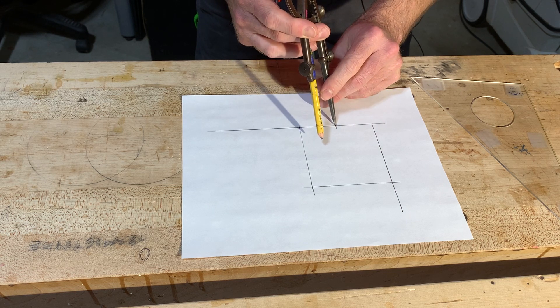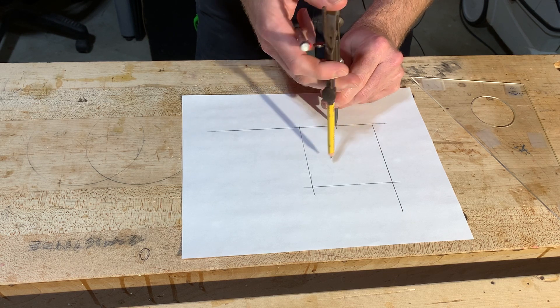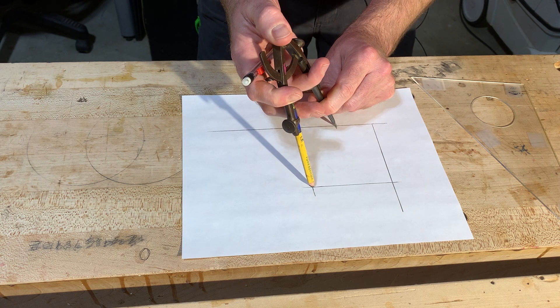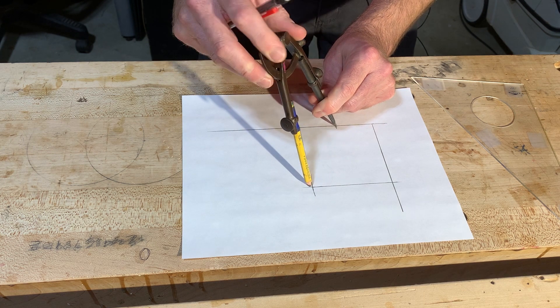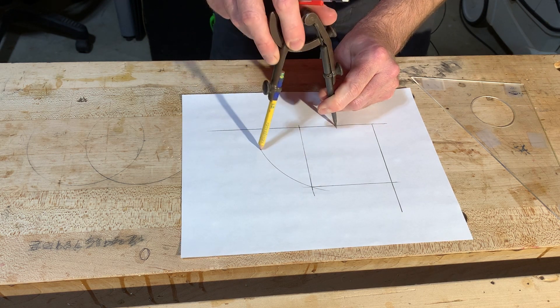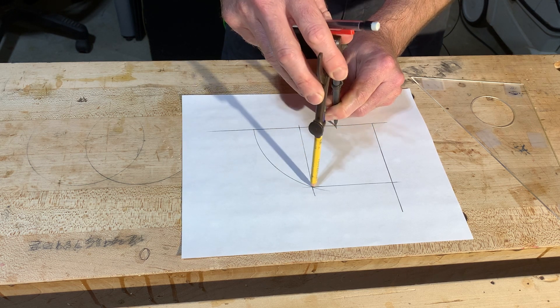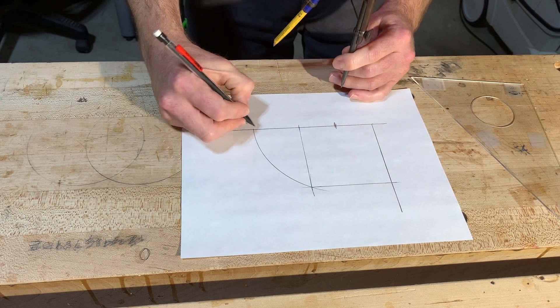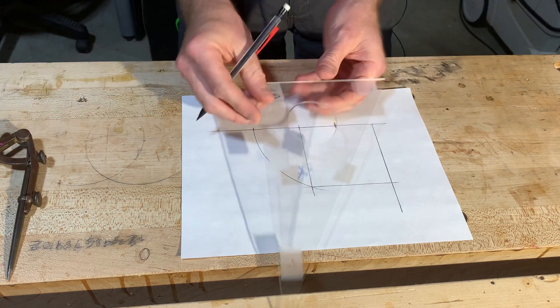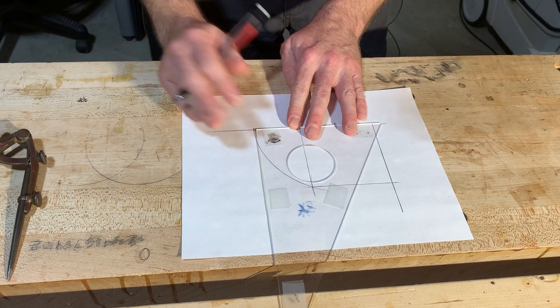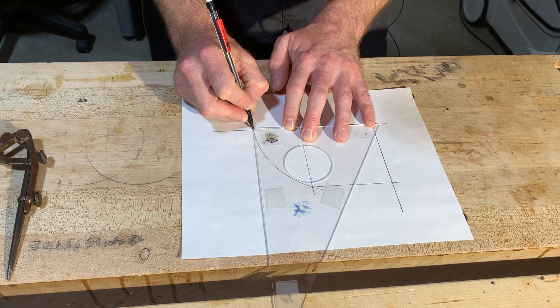You set this here, set this one at the corner. Then you just swing this arc down. This point is a golden ratio.